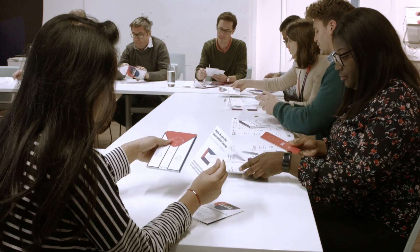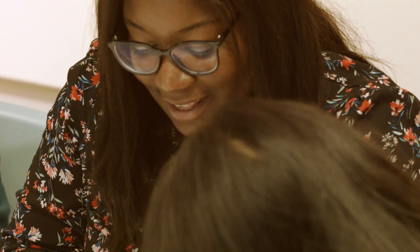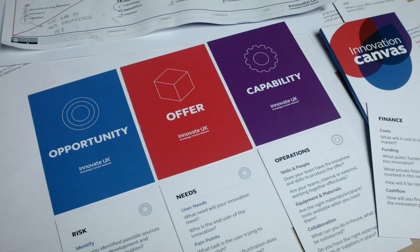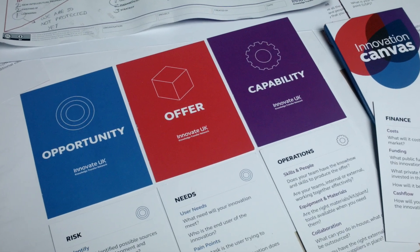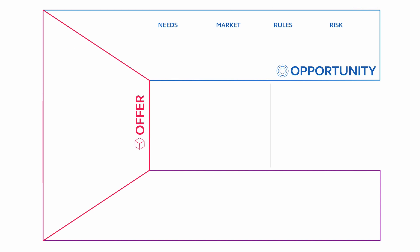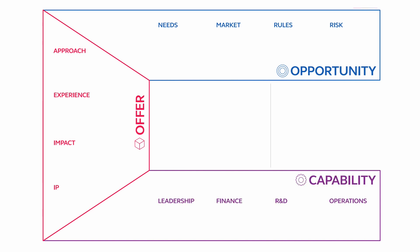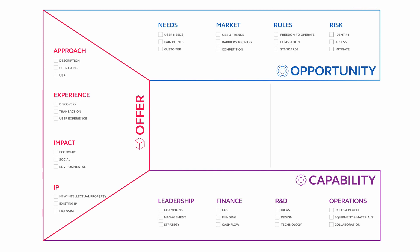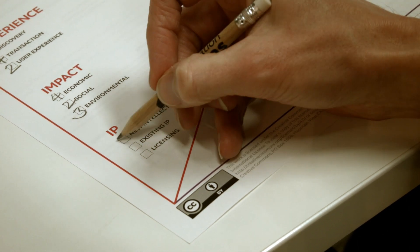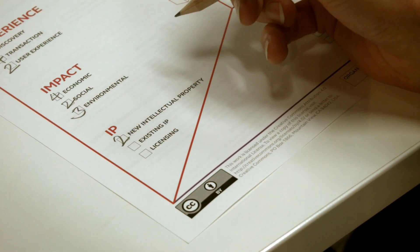In a first pass, you make a rapid assessment of the strengths and weaknesses of your project by considering the questions relating to the three key drivers: opportunity, offer, and capability. Each driver is made up of four topics, and you give yourself a score on how well you can answer questions about the individual components of those topics. Give yourself a mark between one for components that need work and five where you feel you have things sorted.